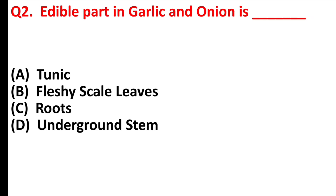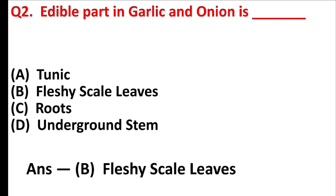The edible part in garlic and onion is blank. Answer is option B: fleshy scale leaves.